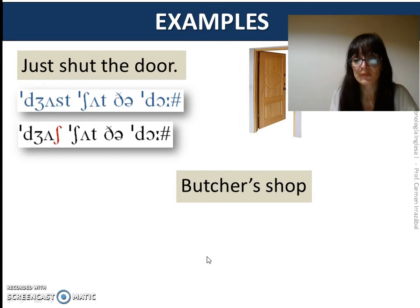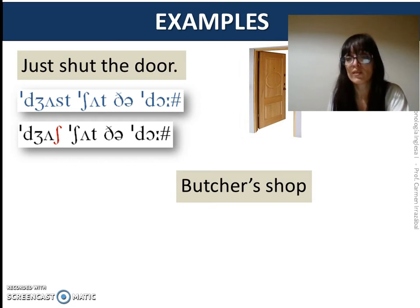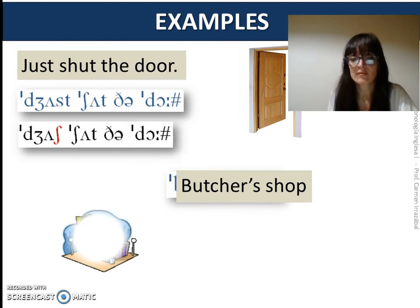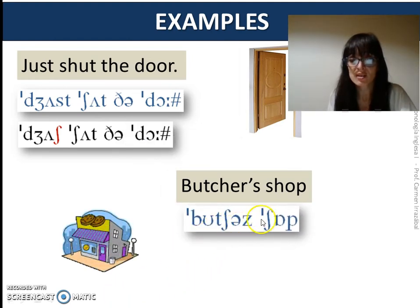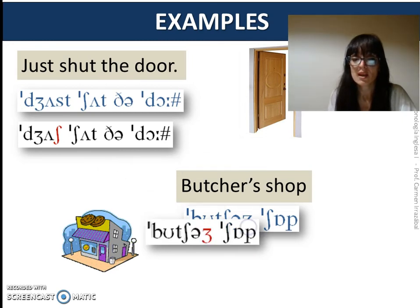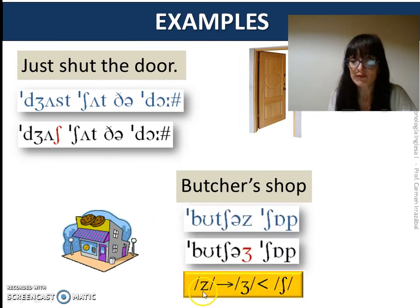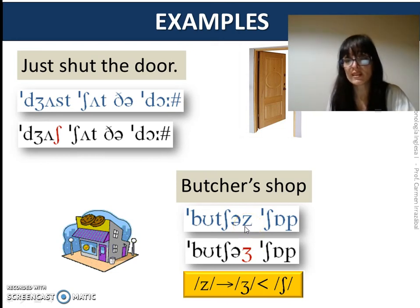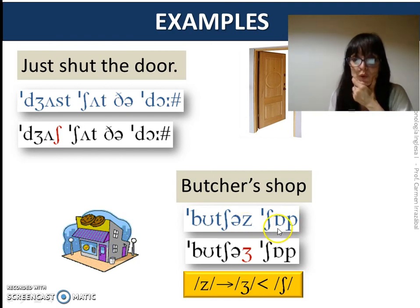Let's see another example. What happens when 'butcher's' is juxtaposed with 'shop'? What do you think happens to the voiced alveolar fricative? When the voiced alveolar fricative comes into contact with the palato-alveolar fricative, it changes into a voiced palato-alveolar fricative sound. The alveolar articulation is moved backwards and prepares for the pronunciation of the following palato-alveolar one.